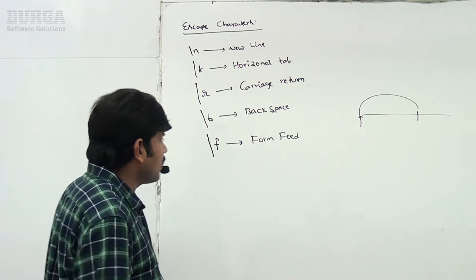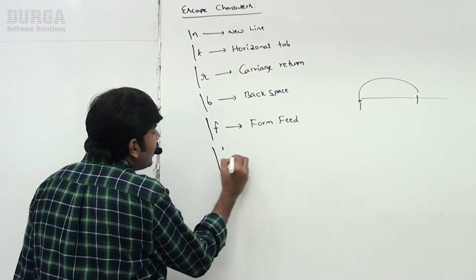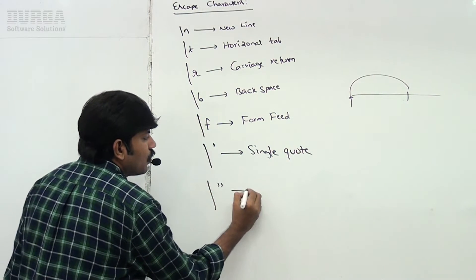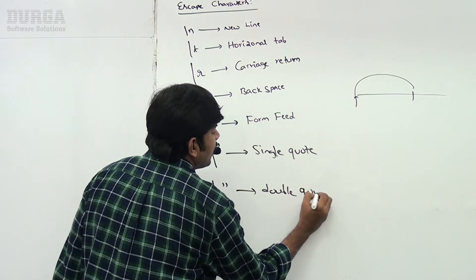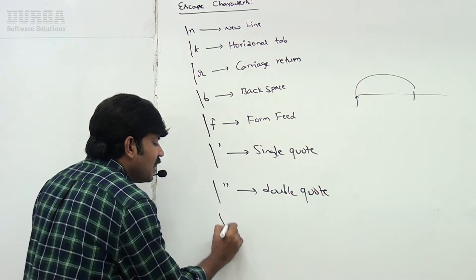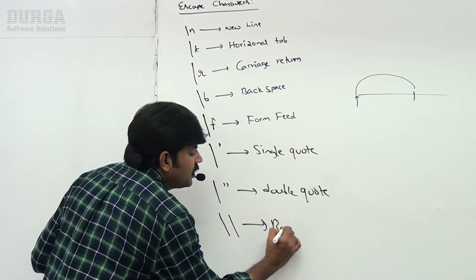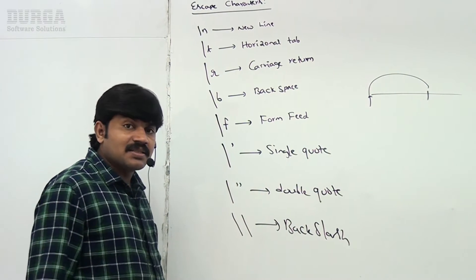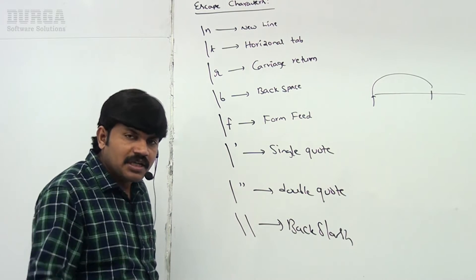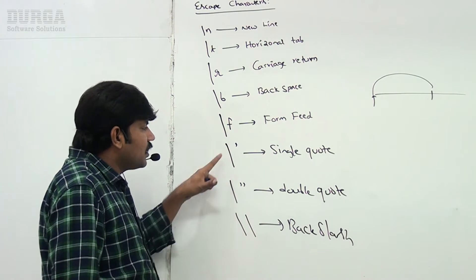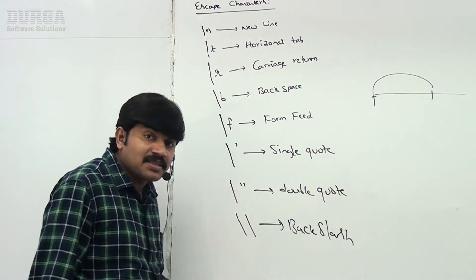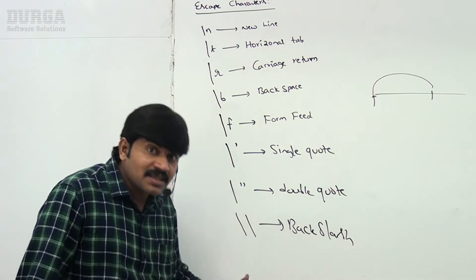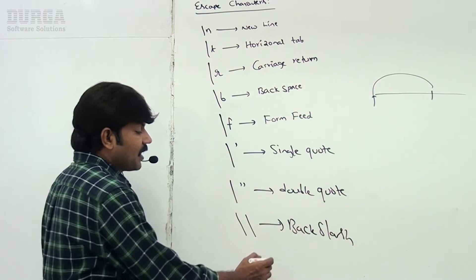Backslash single quote represents the single quote symbol. Backslash double quote represents the double quote symbol. Backslash backslash represents the backslash character. If you want to use single quote, double quote, or backslash symbols in your string, then you require to use these escape characters.